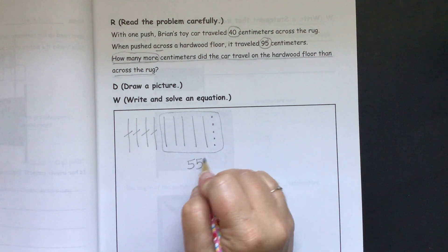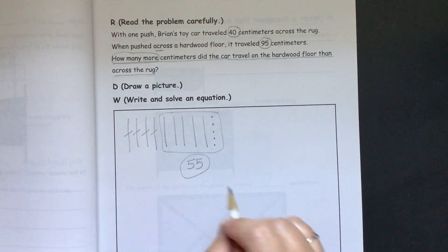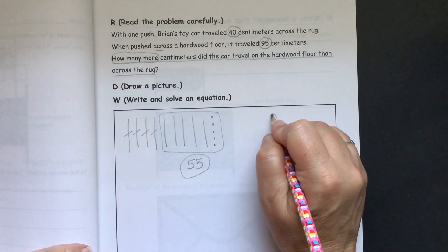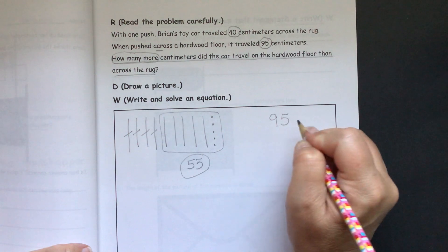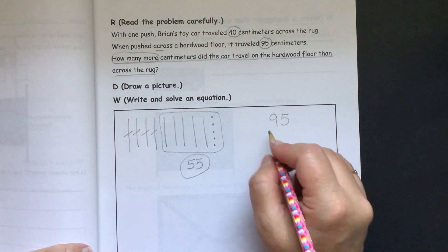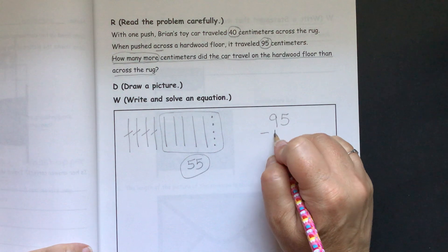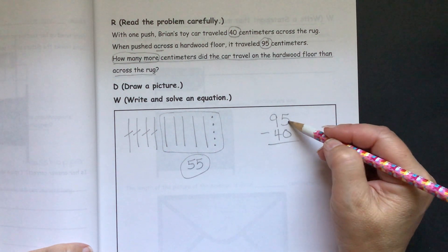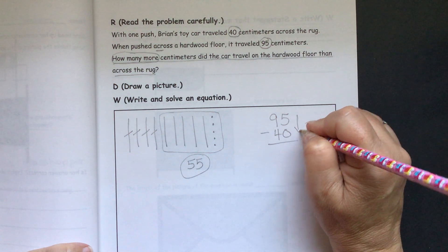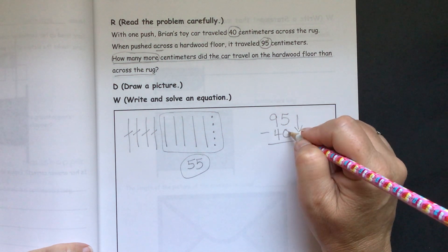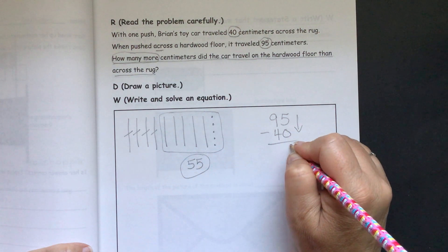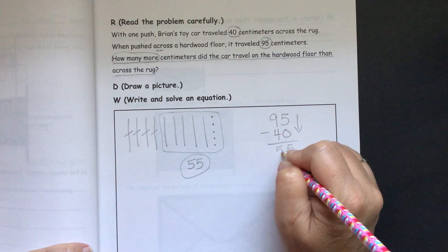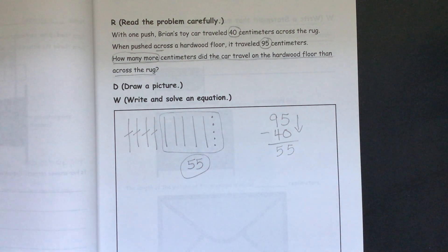We have 55 centimeters. So we would write our equation with subtraction. We always start with the largest number in second grade. So we are going to have 95 minus 40. And we can just go straight down. 5 minus 0 is 5, and 9 minus 4 is 5. So we have the same answer. We did it correctly.